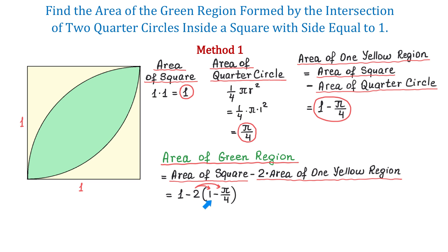We will distribute negative 2: negative 2 times 1 is −2, and negative 2 times negative π over 4 is plus π over 2. Bringing those together, 1 minus 2 is −1, so the area of the green region is π over 2 minus 1.